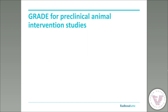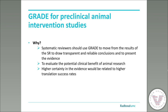Now we know how GRADE works, but why is it also important for animal studies and what are the differences? As in the clinical situation, systematic reviewers of animal studies should use GRADE to move from the results of a systematic review to make conclusions and present the evidence — in order to evaluate the potential clinical benefits of animal research, or to decide whether starting a new animal experiment contributes to the existing evidence base. It's assumed that a higher certainty in the evidence would be related to higher translation success rates.